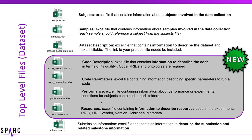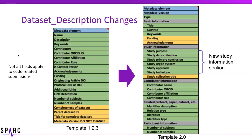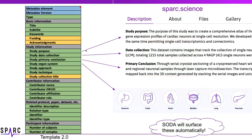There are two new descriptive files for performance and resources, which are optional. The submission file is exactly the same. Looking at the dataset description file, it may look really different at first, but in fact it's not. We tried to make it more straightforward by grouping things into basic information, study information, and contributor information. The study information was previously just one description field. Now instead of one blob for a description, we have a study purpose, a data collection section, and a primary conclusion.